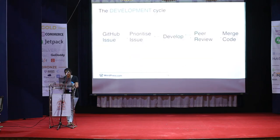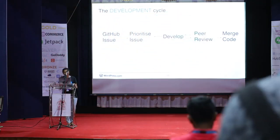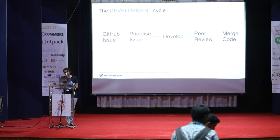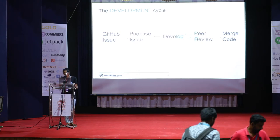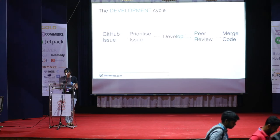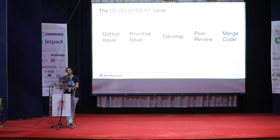Now we come to the development cycle — the term we use to describe the process of how a product is basically built. Everything happens on GitHub. Each potential development starts with a GitHub issue, which just defines the problem statement. It can be anything from finding a bug that needs fixing, changing a design concept, the size of a button in the app, or something as complicated as providing image upload support in the mobile app.